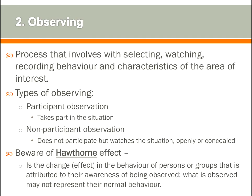Observation is a process that involves selecting, watching, and recording the behavior and characteristics of areas of interest. There are two main types: participant observation, where the researcher takes part in the situation or event, and non-participant observation, where the researcher watches openly or concealed without participating. We also need to be aware of the Hawthorne effect — a change in behavior attributed to the subject's awareness of being observed — meaning what is observed may not represent their true or normal behavior.